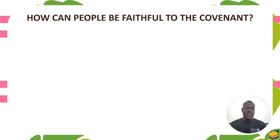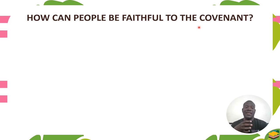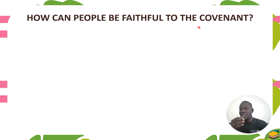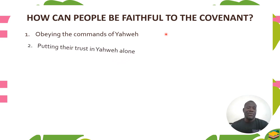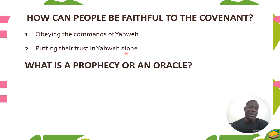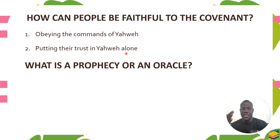Now let us look at how people can be faithful to a covenant. In the book of Isaiah, we will see the prophet calling people to be faithful to God and to the covenant — to be a people of the covenant. What is in the covenant? Obeying the commands of Yahweh, putting their trust in Yahweh alone. In remaining faithful to the covenant, what Isaiah says is basically the commands of Yahweh and trusting him alone.